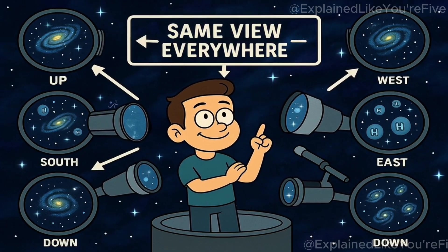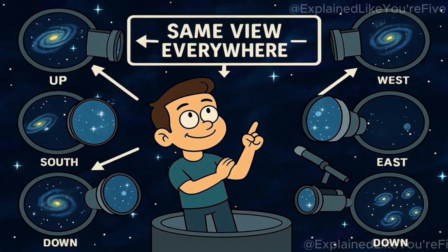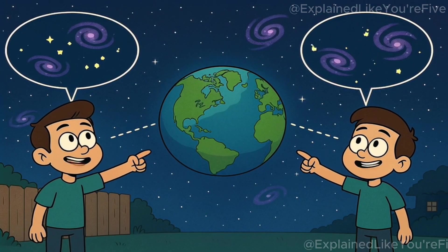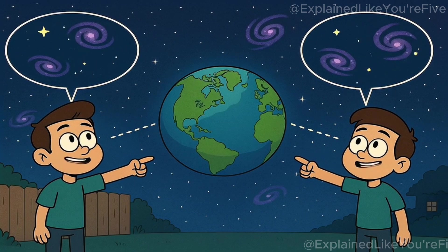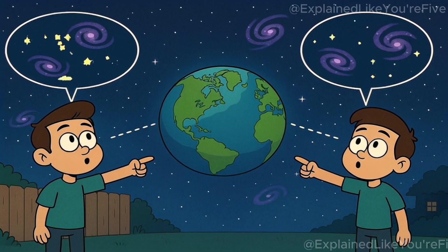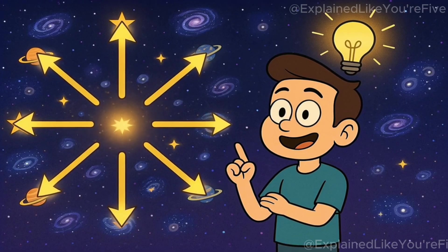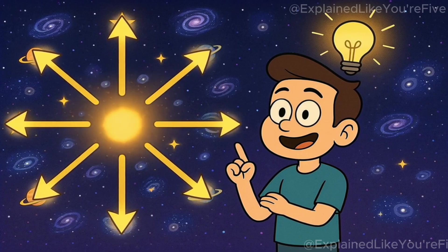The Big Bang theory also explains why the universe looks roughly the same in all directions. If you look at the night sky from your backyard, and then someone on the other side of the Earth looks at their night sky, you'll both see roughly the same kinds of things. Stars, galaxies, and empty space distributed in similar patterns. This makes sense if everything started from the same tiny point and expanded outward in all directions.